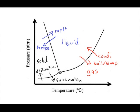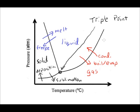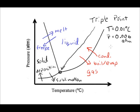Finally, this point on the phase change diagram is a really interesting point — this is referred to as the triple point of water. For water, the triple point occurs at the following conditions: the temperature is 0.01 degrees Celsius, and this is occurring at a pressure of approximately 0.006 atmospheres. And this has been a brief look at phase change diagrams.